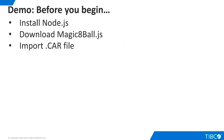Some setup is required before you begin this demo. First, we need to install Node.js, which is a JavaScript server. Our Magic 8-Ball is implemented in JavaScript. Next, download the Magic 8-Ball application and set it up to run in Node. Finally, import the CAR file for this demo into TDV. This will install the custom Java procedure, define the data source connection to the data warehouse, and install a set of TDV resources that use the Magic 8-Ball. The data warehouse is hosted on a website and should run without any additional configuration when you import the CAR file. Complete instructions for these steps are found in the additional resources that accompany this demo.